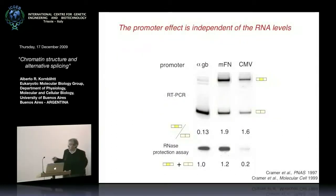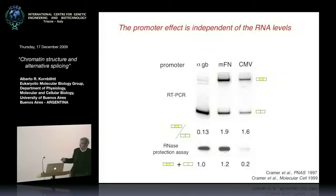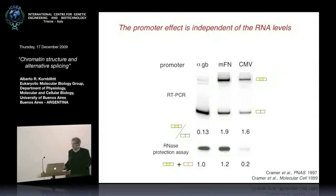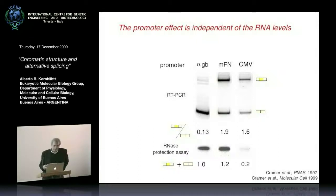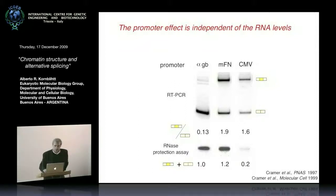We observed that if transcription was driven by the alpha-globin promoter, there was little inclusion of the alternative exon. But if driven by the fibronectin or CMV promoter, there were higher inclusion levels. This was not correlated with mRNA expression levels — alpha-globin and fibronectin had similar high expression but different inclusion levels. This suggested the effect was related not to the strength of the promoter, but to a quality of the promoter conferred to the transcription machinery.